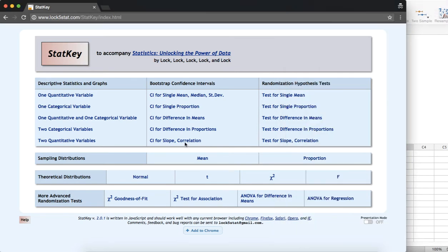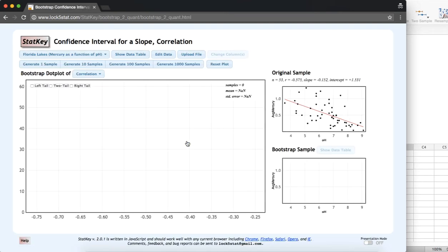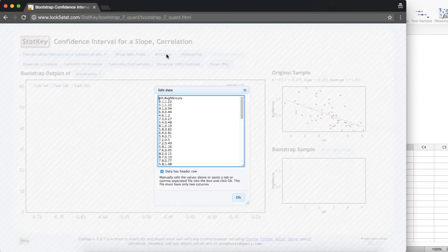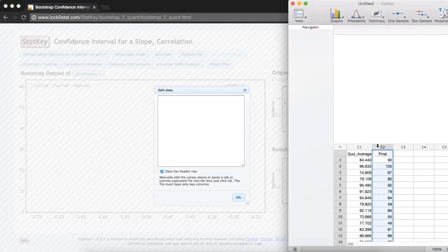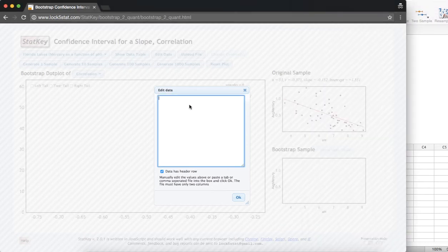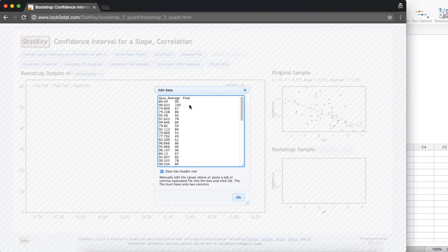In StatKey, we'll select CI for Slope or Correlation. I'm going to edit the data. I'll select all and delete the current data set and then copy my two variables from Minitab Express and paste into StatKey. Our data does have a header row with the names of the variables, so we'll leave this box checked.